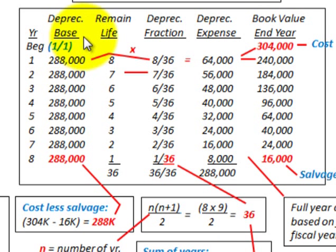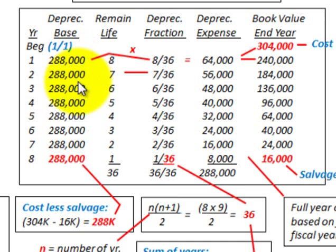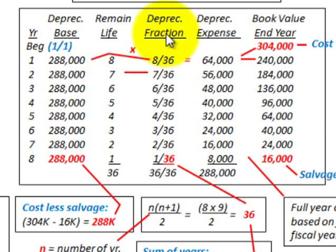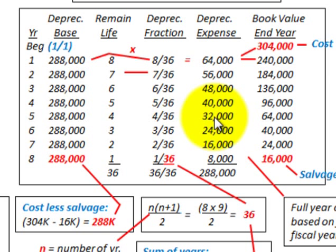What we have to do is develop our depreciation chart. We've got our depreciation base — that's what we're going to be depreciating — and then we're going to have our remaining life and depreciation fraction. From that we can determine our depreciation expense and our book value at the end of the year.